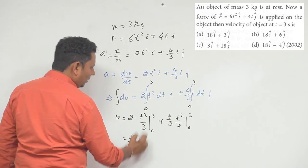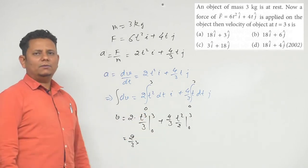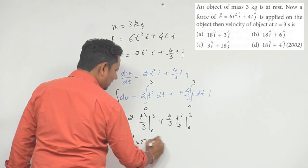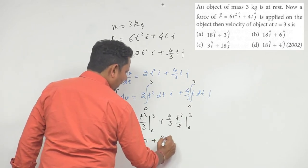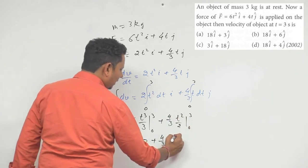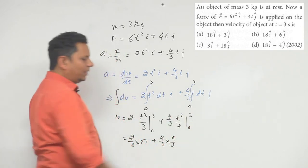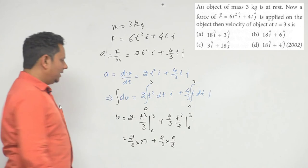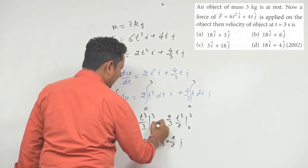This will be 2/3 multiplied by 3 cube, which is 27, minus 0, plus 4/3 multiplied by 3 square, which is 9 by 2. Adding these, we get our final velocity value. Remember this is i cap and this is j cap.